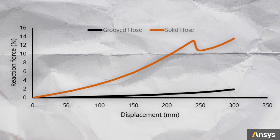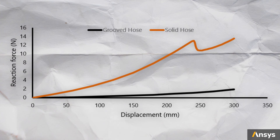We have already seen that the solid hose undergoes buckling, and now we can see in this plot that the solid hose is much stiffer than the grooved pipe. There is also a sudden drop in reaction force at the onset of buckling, which then picks up again. This is a classic case of local buckling. On the other hand, the grooved design can bend gradually and with ease, just like we wanted.